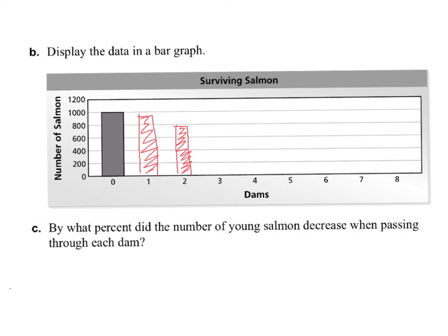Your assignment for tonight is going to be to complete Activity B and Activity C. When you read Activity C, it says, By what percent did the number of young salmon decrease when passing through each dam? So it's looking at each dam individually, not looking for the total decrease. We talked about that in Part A, so your answer is in Part A.